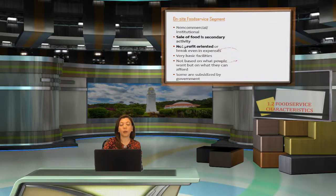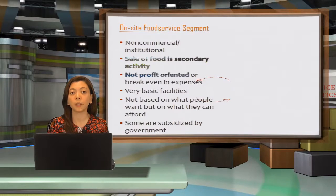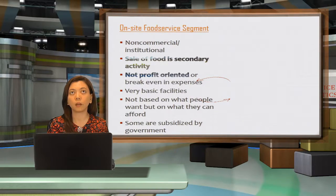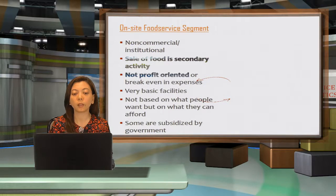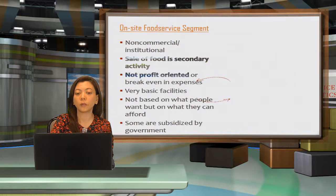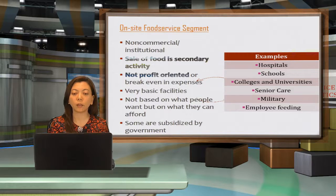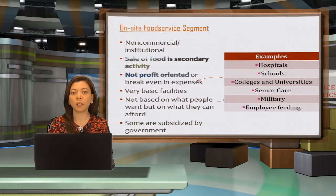The second segment is on-site food service, also known as the non-commercial or institutional segment. Here, the sale of food is a secondary activity — they provide a different primary service, and food is supplementary. It is not profit-oriented; some operations just aim to break even. Facilities are basic and based on what they can afford, with some subsidized by the government. Examples include hospitals, schools, colleges, universities, senior care, military, and employee feeding.